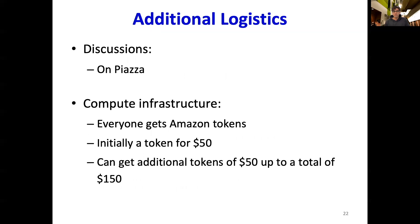All sorts of discussions to do with the course, including questions about training infrastructure, AWS, or specific problems with homeworks, will all take place on Piazza. As far as compute infrastructure is concerned, every student enrolled in this course will get an Amazon coupon initially for a value of $50. Once that's exhausted, you can request additional coupons up to a total of $150. Keep in mind that later homeworks and projects will demand more compute resources than earlier ones, so try to be conservative with how you use your compute resources at the beginning of the course.